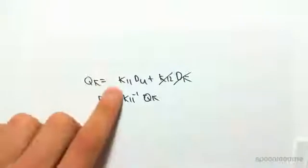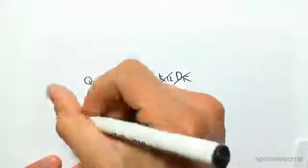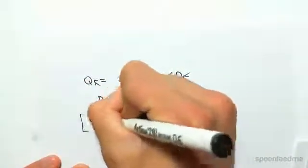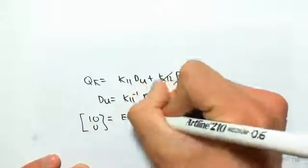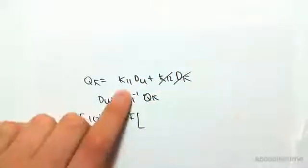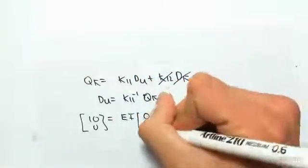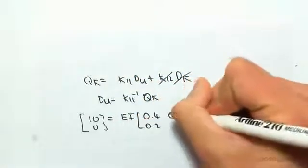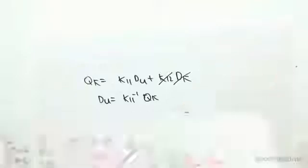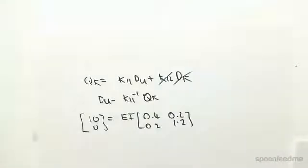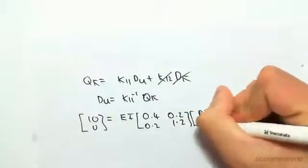Let's write this matrix out. We would have Q known is 10, 0 equals EI outside of K11, which is this matrix here. So just 0.4, 0.2, 0.2, 1.2. I've just written out that matrix there outside of D1 and D2.